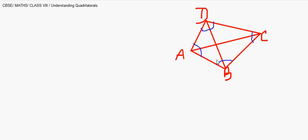Just as we discussed adjacent sides, we also have adjacent angles: angle A with angle B, angle B with angle C, angle C with angle D, and angle D with angle A. The opposite angles are A and C, and B and D.